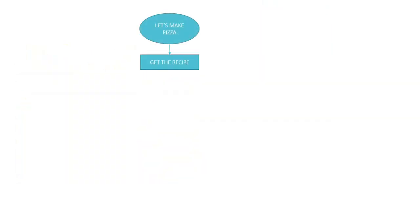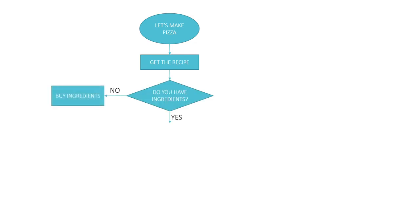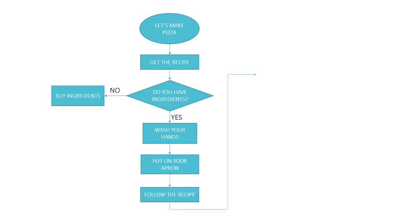Let's make pizza. Get the recipe. Do you have ingredients? No — buy ingredients. Yes — wash your hands. Put on your apron. Follow the recipe. Wait for pizza. Pizza is ready now.